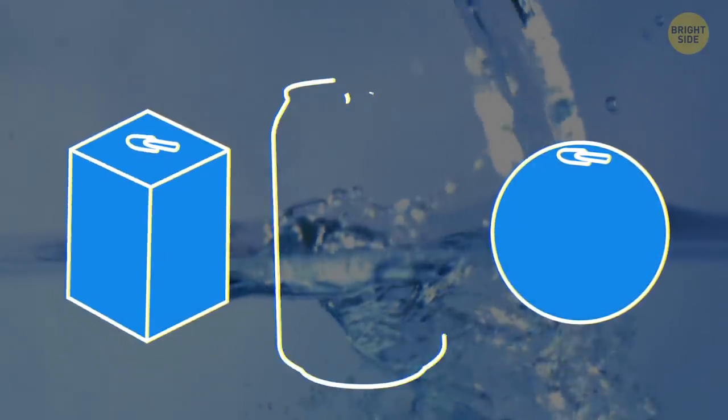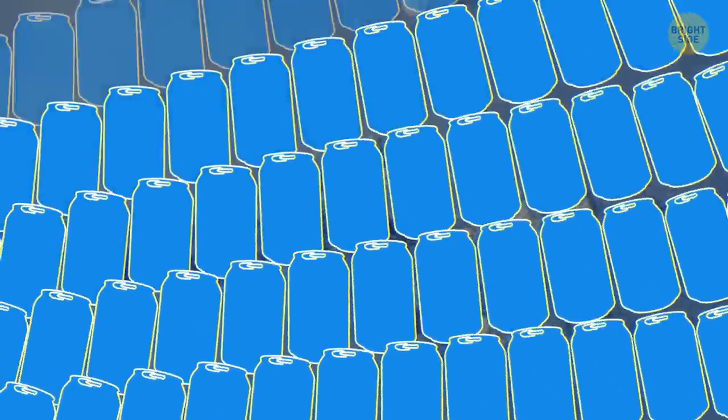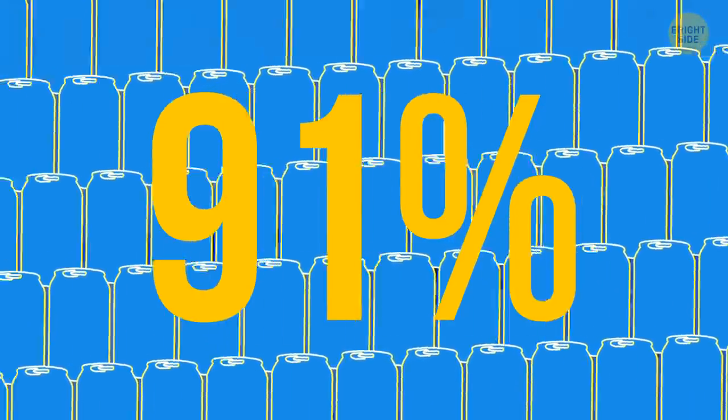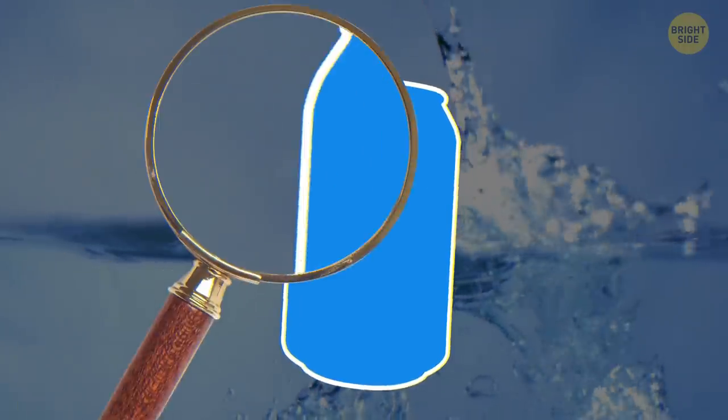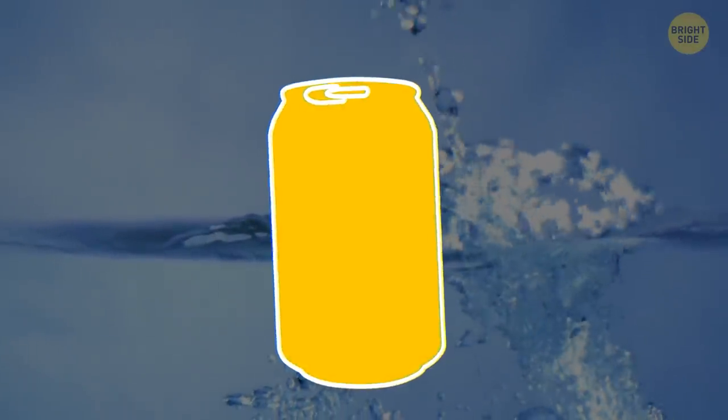The engineers came up with something in between the two options: a cylinder shape. It's close to the cuboid shape when it comes to packaging efficiency. It takes up to 91% of the space. At the same time, it doesn't have weak spots, just like a spherical can, because there are no edges. So the choice was obvious, and most manufacturers figured it out.